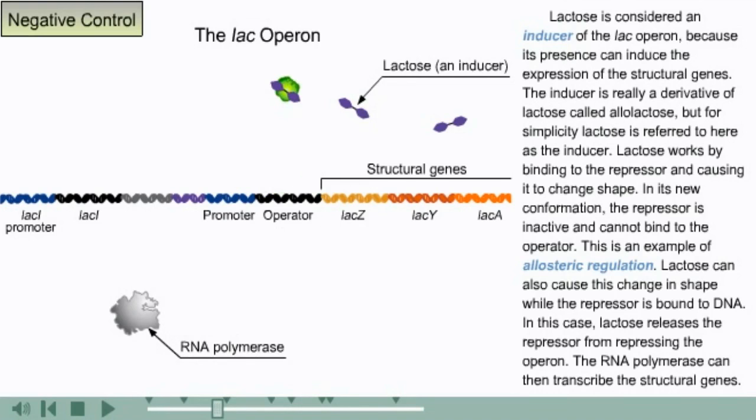Lactose can also cause this change in shape while the repressor is bound to DNA. In this case, lactose releases the repressor from repressing the operon. The RNA polymerase can then transcribe the structural genes.